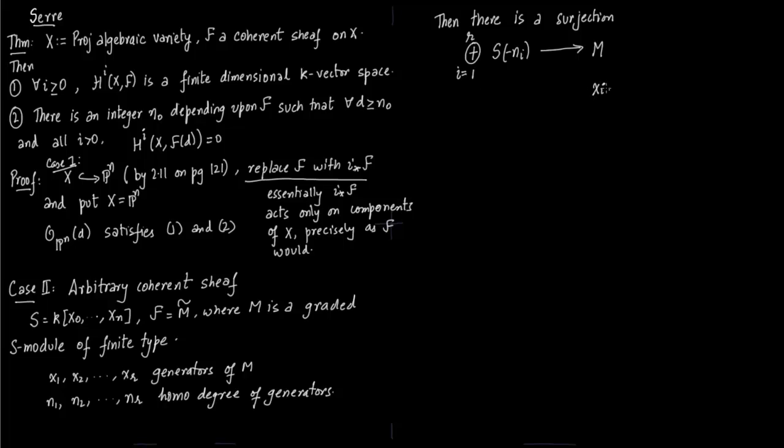We associate xi with the basis ei. This S(-ni) represents the -ni graded part of the ring, so if you multiply by xi you land up in the zero part. Now we pass on to the corresponding sheaves.